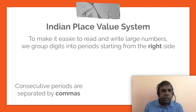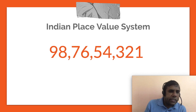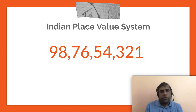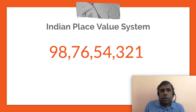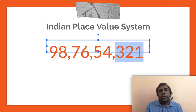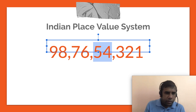These periods are separated by commas. Here is an example where the number is pretty large and we separate it with commas. The rightmost period has three digits, then a two-digit period, then another two-digit period, and another two-digit period. This makes it easy to know what the number is and how to read and write it.